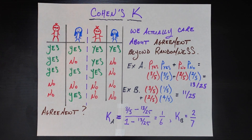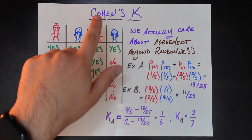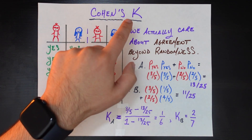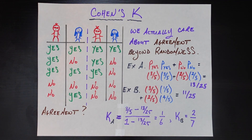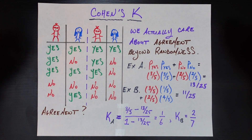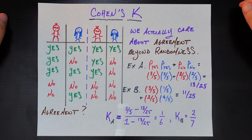Hey everybody, welcome back. I've got a really quick and cool video for you today on Cohen's Kappa — this is the Greek letter Kappa, not a K. To explain it, we're going to dive into an example to begin with, as we do on this channel.